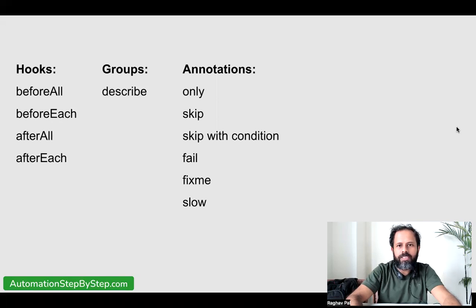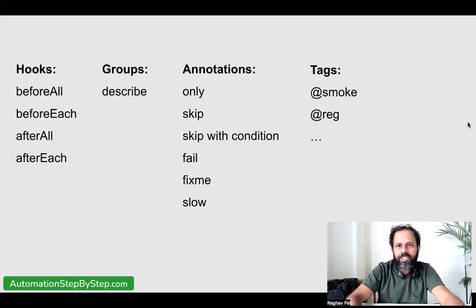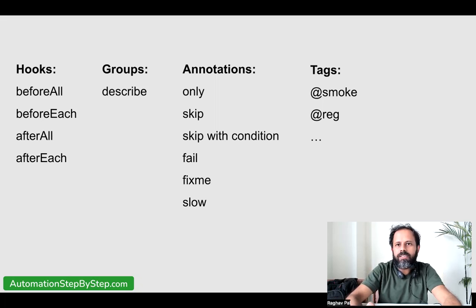We have different annotations like only, skip, fixme, slow, etc. We can also tag our test cases with tags like @regression, @smoke, @sanity, @fast, @slow, etc. We can run tests with specific tags or we can also have an option to skip tests having a certain tag. We will see this in a moment.